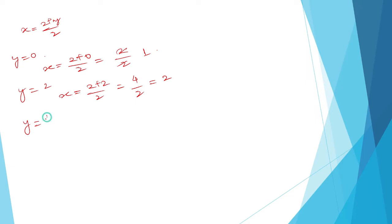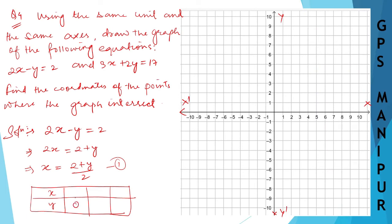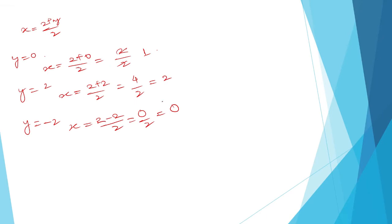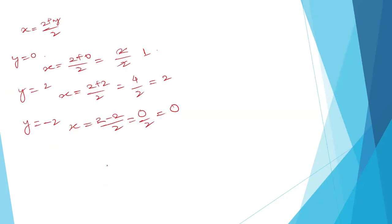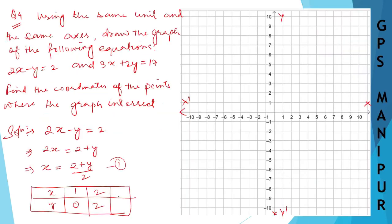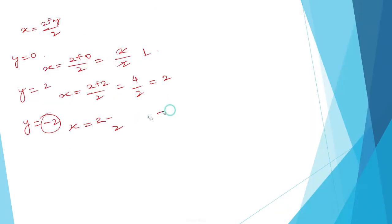Let's take y equal to minus 2. Then x equals (2 minus 2) / 2, which is 0/2, so x equals 0. So our table for equation 1 is: when y=0, x=1; when y=2, x=2; when y=-2, x=0.